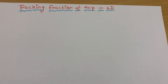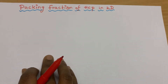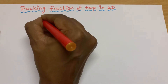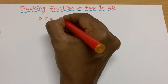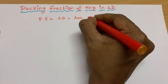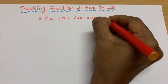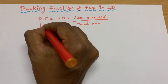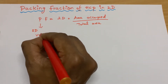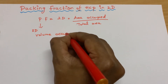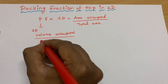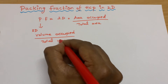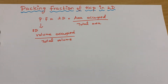Hello students. In today's class, I am going to teach you the packing fraction of the hexagonal closed packing system in two dimensions. In two dimensions, packing fraction is the area occupied divided by the total area. In 3D, we measure the volume occupied divided by the total volume of the unit cell. So this is the difference.